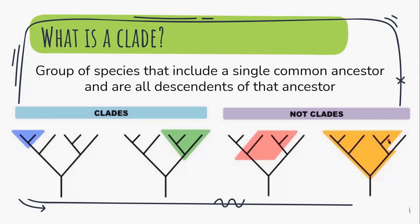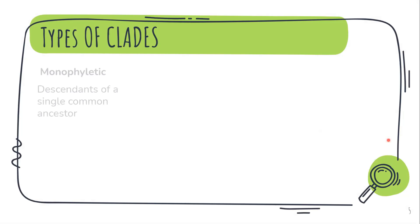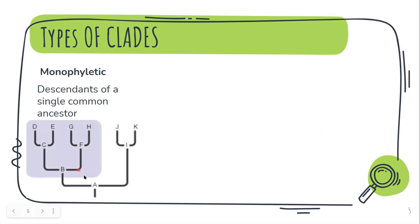Now next we can discuss the different types. So first one is the monophyletic. Now what is this? So they are descendants of a single common ancestor.